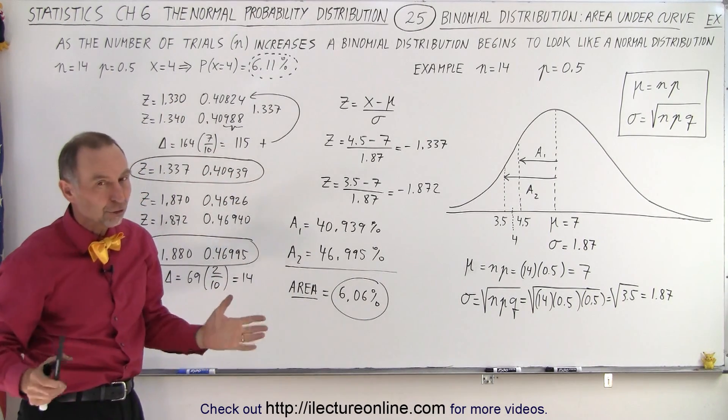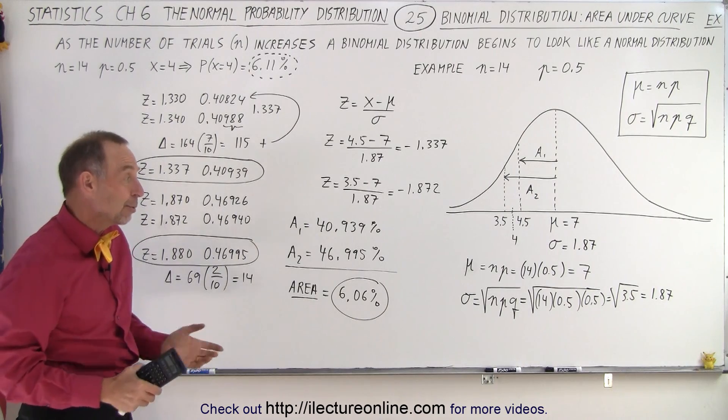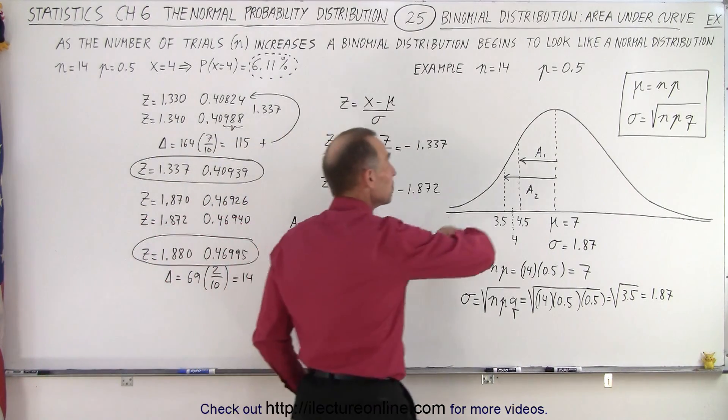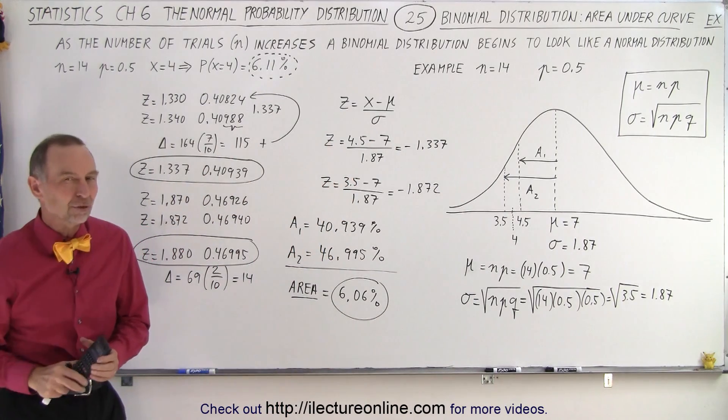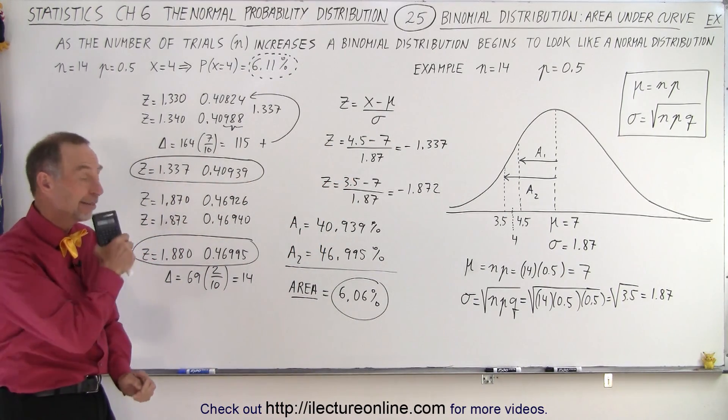But as n gets to be really big, it much more mirrors a normal distribution and those techniques will then be quicker and easier to use. And that is how it's done.